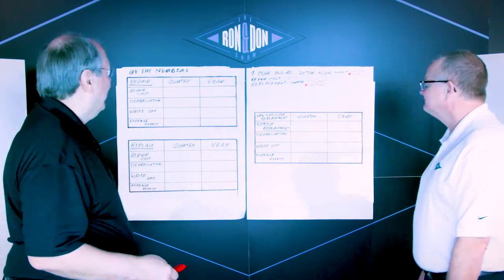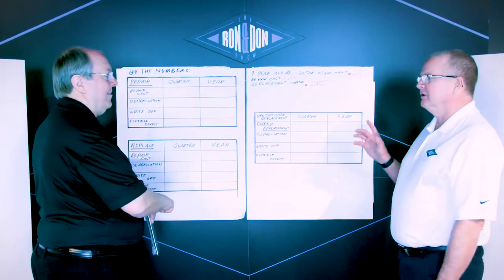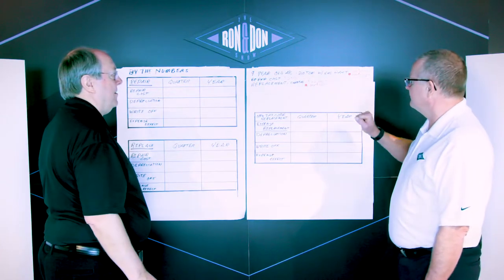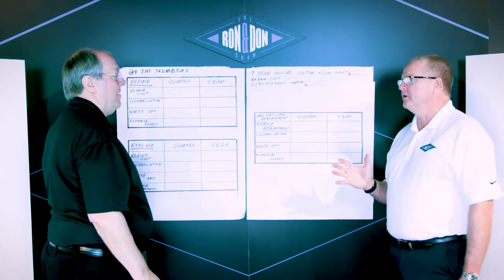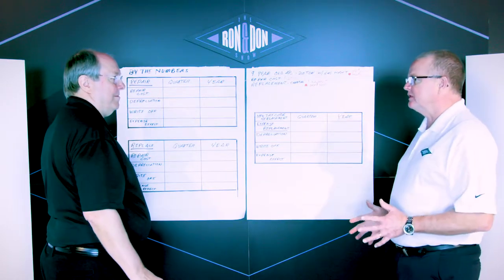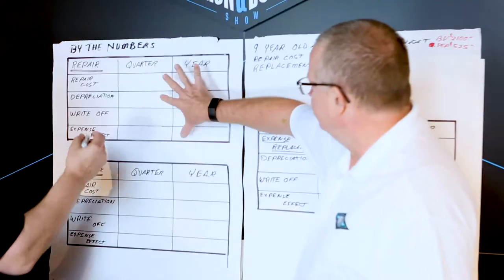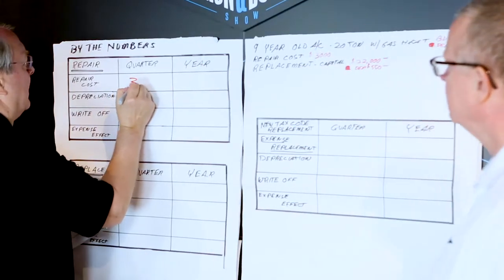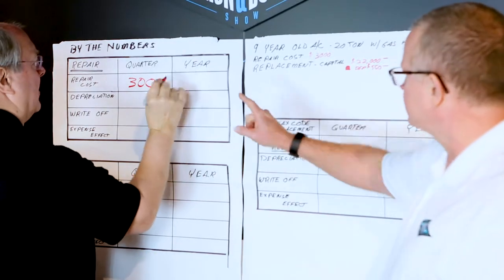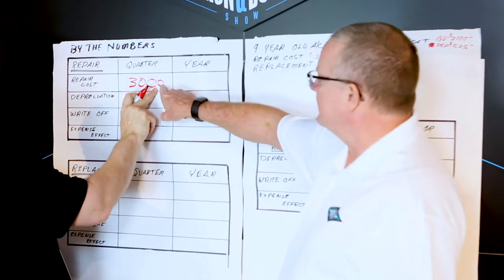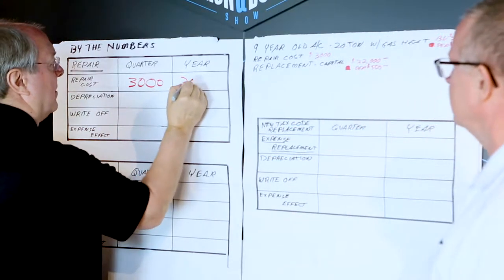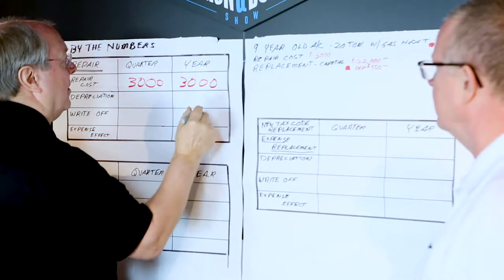Let's get started. Let's take a scenario. Let's say a restaurant's got a nine-year-old air conditioner, and I've made some notes here for myself. That nine-year-old air conditioning unit needs a repair. It doesn't matter what it is, but the repair is going to cost $3,000. So in the repair section, let's go ahead and note that we're going to spend $3,000 in the individual repair.